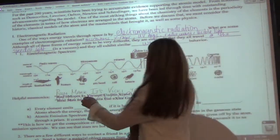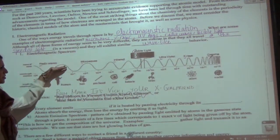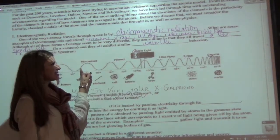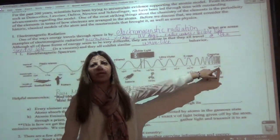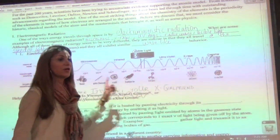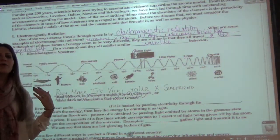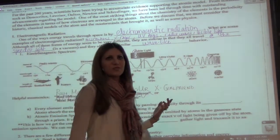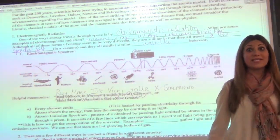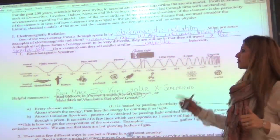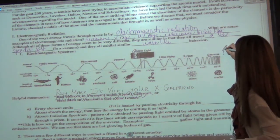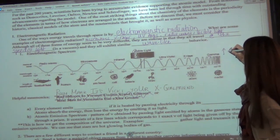Looking at the wave diagram, what's happening as we go from radio waves toward gamma rays? The wave is getting faster — but we don't call it speed; we say the frequency is increasing. This end — toward gamma — has a high frequency. The symbol for frequency is a Greek letter that looks like a V and a U mixed; it's called nu.